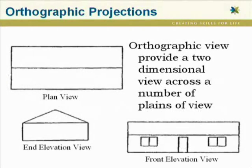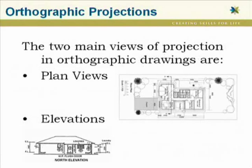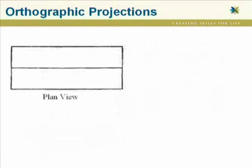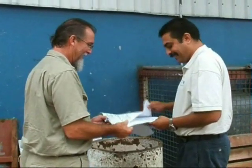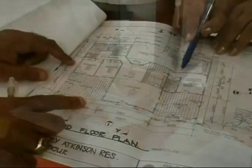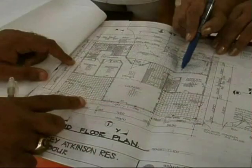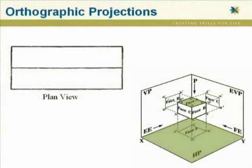Orthographic projections give two-dimensional views of objects. These drawings are taken across several planes of views. The two views mostly used in construction drawing are plan views and elevation views. The plan view is a view of an object from above, so you'll see plan views of floor areas called floor plans, and views of sites such as site plans. Don't confuse the expression 'plan view' with 'set of plans' or 'plan reading.' The term 'set of plans' relates to a complete set of working drawings including elevations and plan views, whereas 'plan view' refers to the orthographic projection from above.